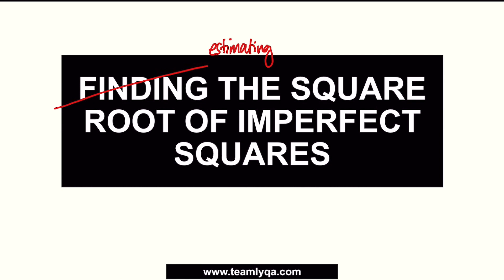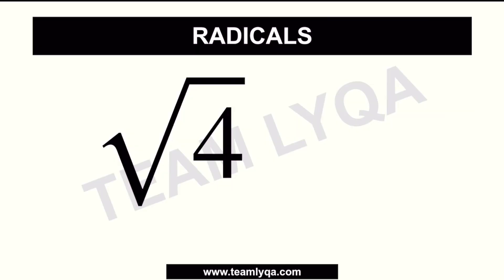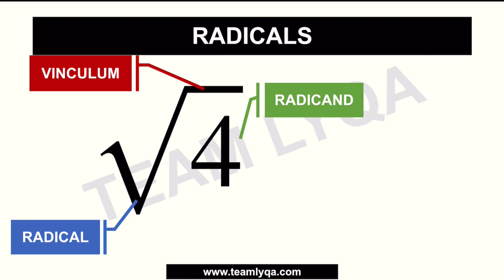Before we do that, a quick review of what radicals are. We usually see it like this, and it has parts. There's the vinculum — the line on top. We have the radical symbol, which is the square root sign. We have the radicand, the number underneath what we call the umbrella. And yes, we have a full video lesson on this if you want to learn how to simplify it or do operations like addition, subtraction, and multiplication.